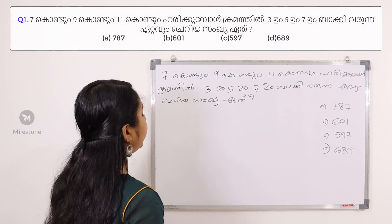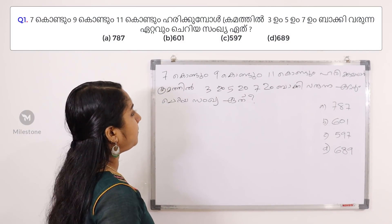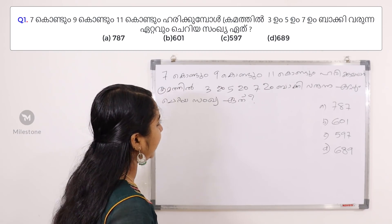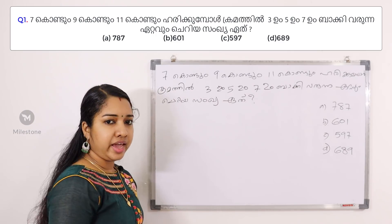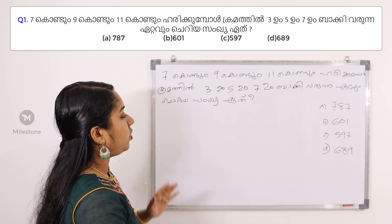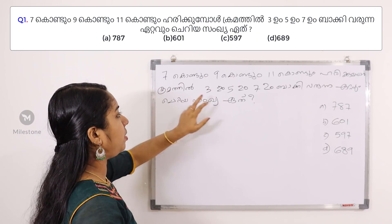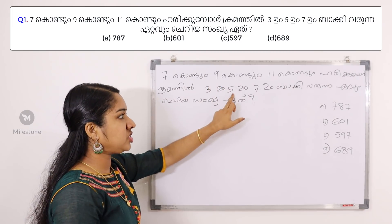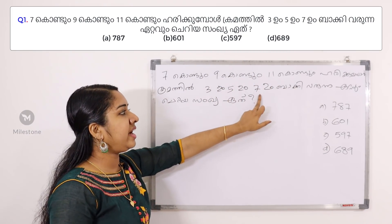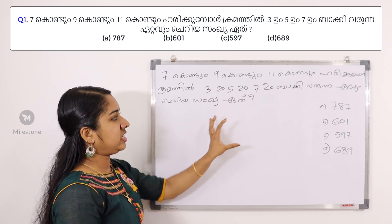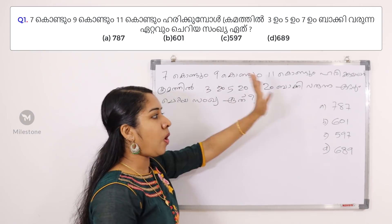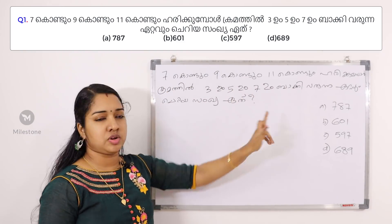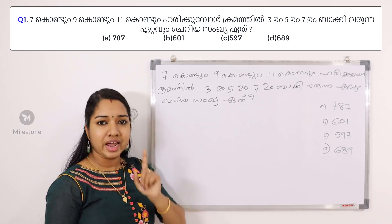First question: 7, 9, 11 and 3, 5, 7. You can download the question papers from MilestonePSC.com — that is a question paper library. Upload and download the question paper library from MilestonePSC.com. Now we have to use zero.